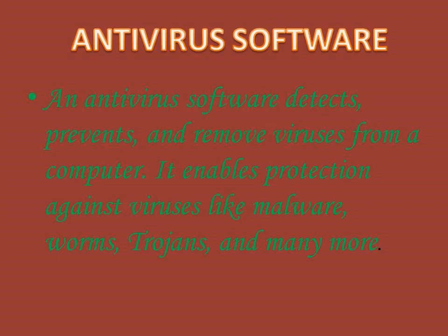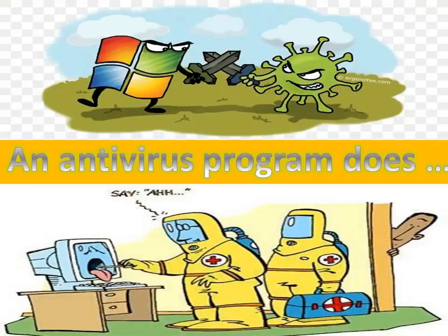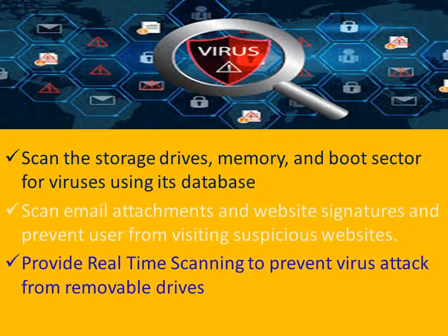An antivirus program does the following: first, it scans the storage drives, memory, and boot sector for viruses using its database. Second, it scans email attachments and website signatures, and prevents the user from visiting suspicious — meaning doubtful — websites. It also provides real-time scanning to prevent virus attacks from removable drives.